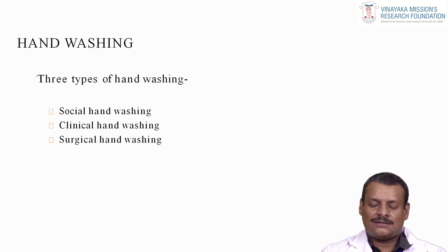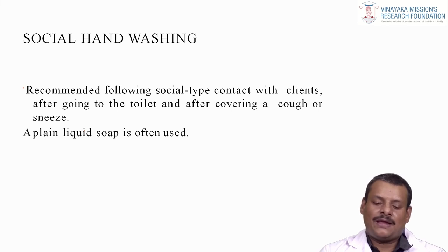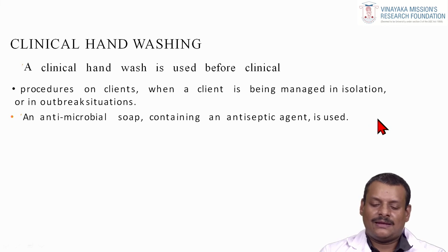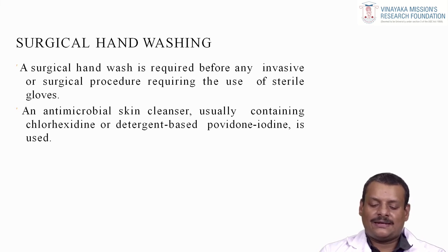Three types of hand washing are considered: surgical scrubbing, social hand washing, and clinical hand washing. Social hand washing is recommended after social contact with clients, after going to the toilet, and after covering a cough or sneeze; a plain liquid soap is used. Clinical hand washing is used before clinical procedures on clients, or when a client has been managed in isolation or in an outbreak situation; an antimicrobial soap containing an antiseptic agent is used. For surgical hand washing, it is required before any invasive or surgical procedure requiring the use of sterile gloves; an antimicrobial skin cleanser containing chlorhexidine or iodine-based detergent is used.